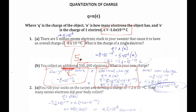Quick scientific notation review: it's always an integer followed by a decimal and however many decimal places needed, times 10 to the appropriate power. So 500,000 is 5.0×10⁵ — moving the decimal five places. You could also just enter 500,000 in standard notation and it would work out the same.